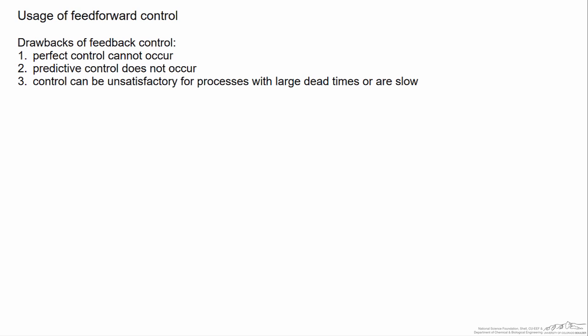Therefore in order to deviate from those schemes there have to be reasons why. There are a number of reasons, and here we will focus on three of them. The first is that perfect control cannot occur.